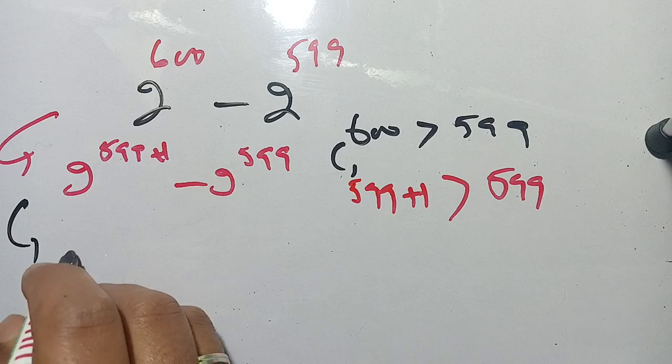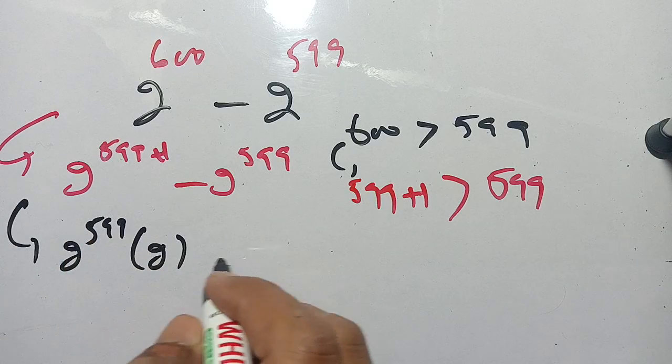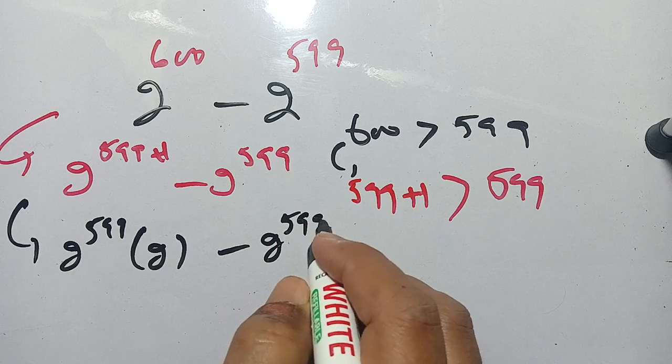Now we can write this as 2 raised to power 599 times 2 raised to power 1 minus 2 raised to power 599.